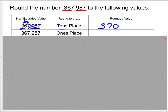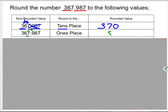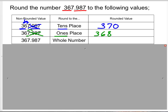Rounding the same number to the ones place: the seven is in the ones place, it looks at the nine, and nine tells seven to round up to eight. Six and three remain the same, and you get rid of the decimal since you're working with whole numbers — giving you 368. Rounding to the nearest whole number is the same as rounding to the ones place, so we get 368 again.